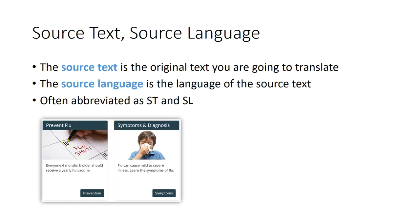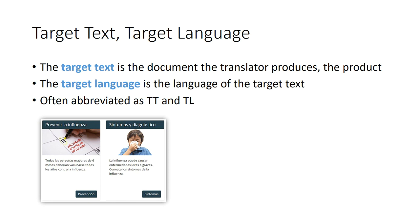The next basic terms are source text and source language. The source text is the original text that you're going to translate from, and the source language is the language of that original text. These are often abbreviated as ST for source text and SL for source language. As an example, the source language is English and the source text is part of the CDC Centers for Disease Control website.